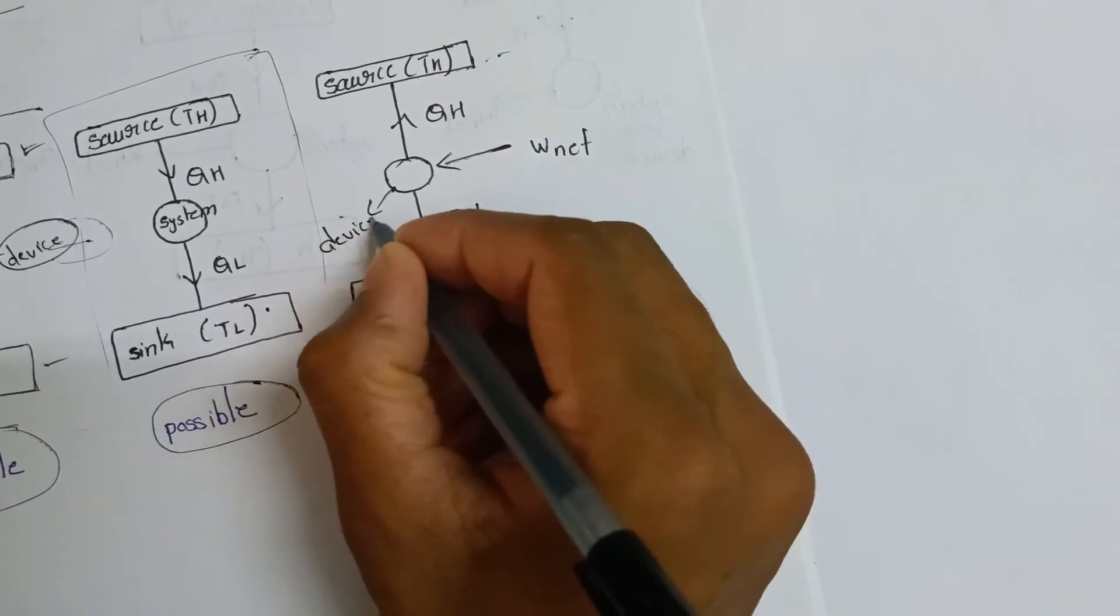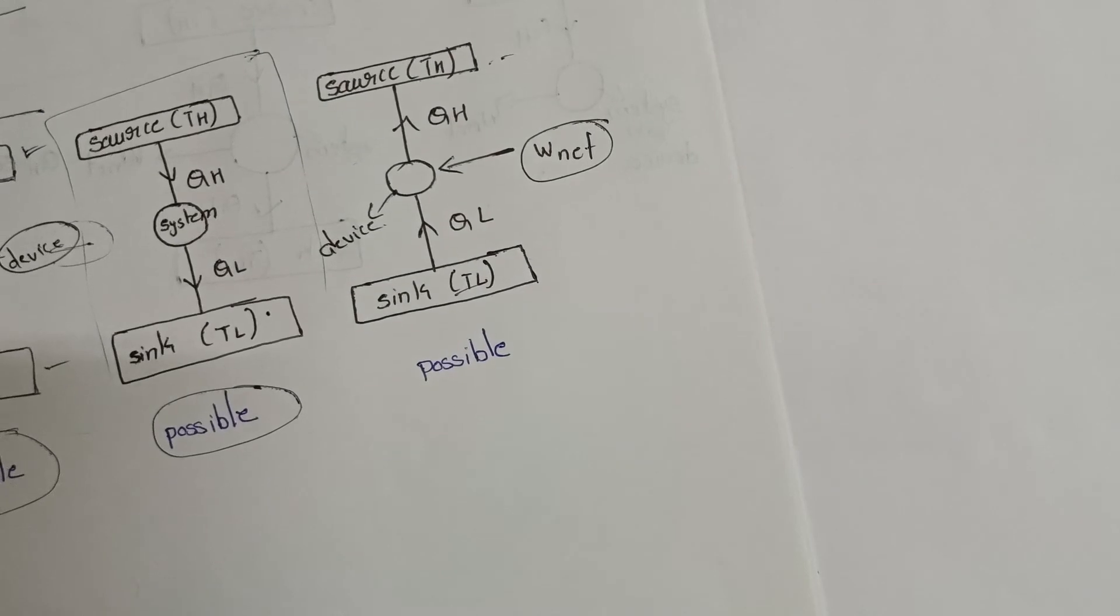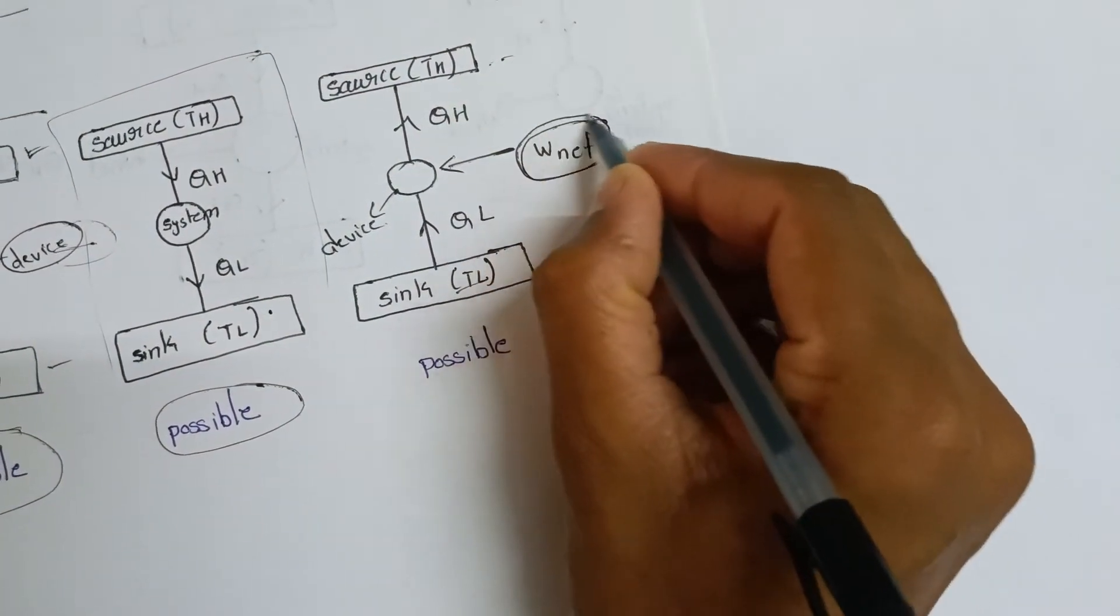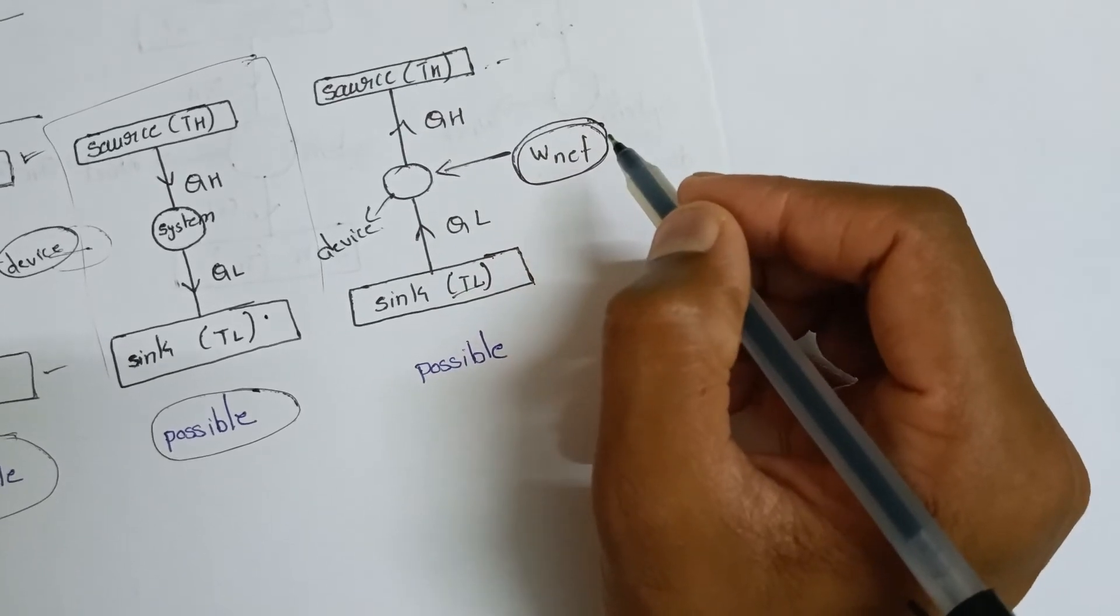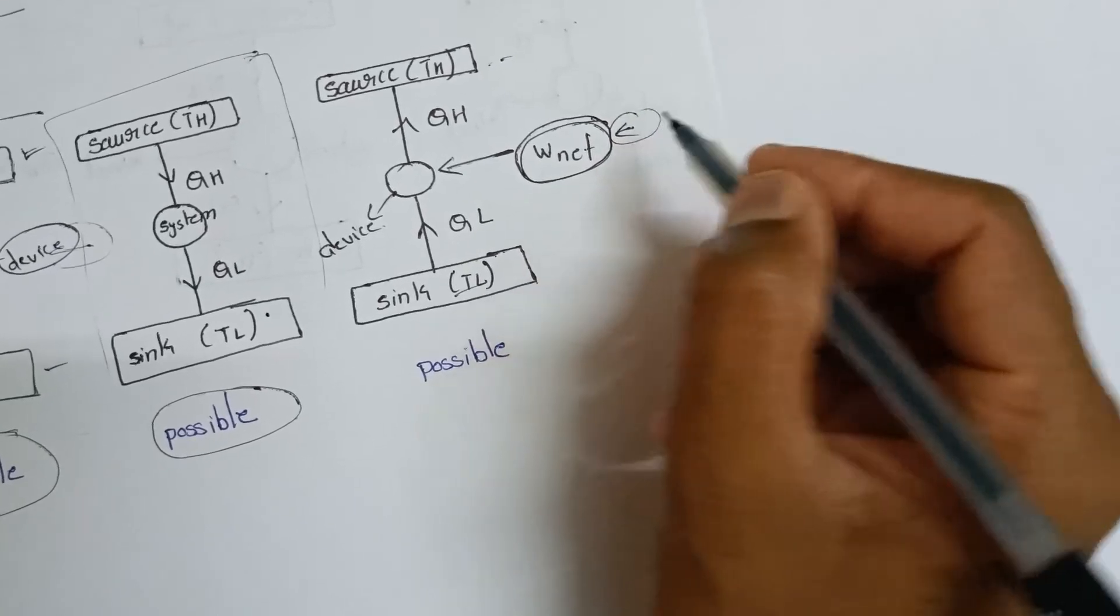Refrigerator is the same: low temperature to high temperature requires external work input. Clausius statement: source to sink (high to low temperature) happens naturally without work input.